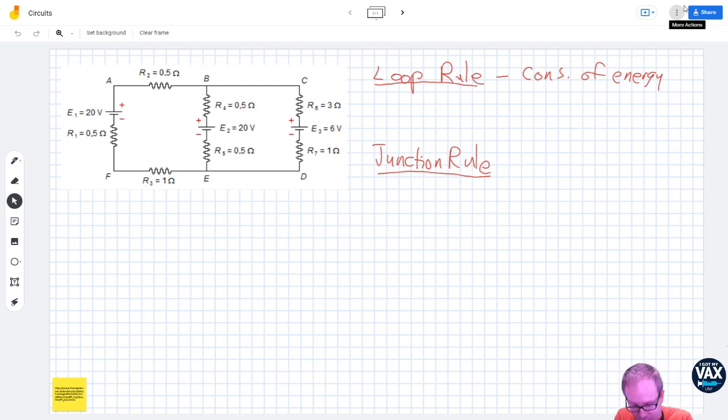Let me show you what this means. So this circuit has two loops. There's a loop on the left, maybe we'll call that L for the left loop, and there's a loop on the right, maybe we'll call that R for the right loop. The idea is that if you go around and sum up all the voltage changes across all the circuit elements, that total needs to be zero by the time you come back around.